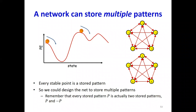A student asks: if we move to tanh, is the number of iterations to converge always going to be less than with the step function? The professor clarifies: it's actually going to be smoother, so you're going to take a little more time. The key point is that because of the nature of the constraint — you can have multiple minima — although the function is quadratic, you can have multiple minima because you're not looking at every point of the space.